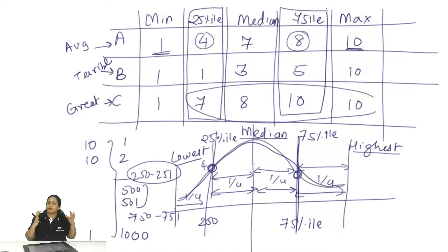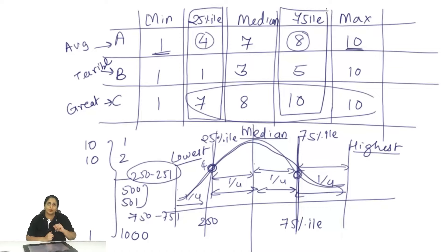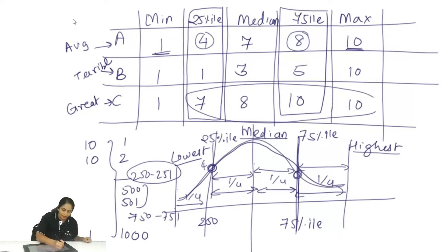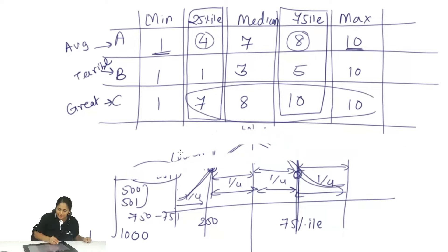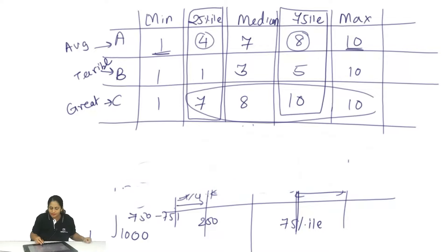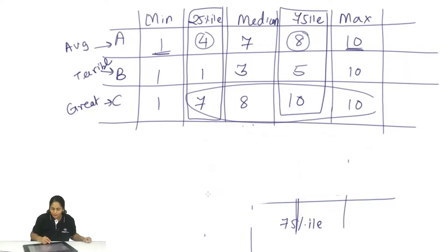This is basically what is encapsulated in a box and whiskers plot. For this data I will show you how to draw the box and whiskers plot and what it essentially represents. Let me erase this and from the data of these three movies, I will try to draw the box and whiskers plot.